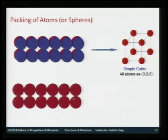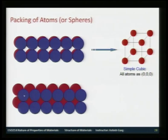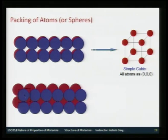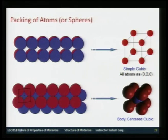In the BCC structure, the first layer is arranged so that each atom in the second layer sits at the center of the square made by the first layer. The third layer goes right on top of the first layer. The resulting structure is a body-centered cubic structure where corner atoms are at 0,0,0 and the body-centered atom is at ½,½,½.